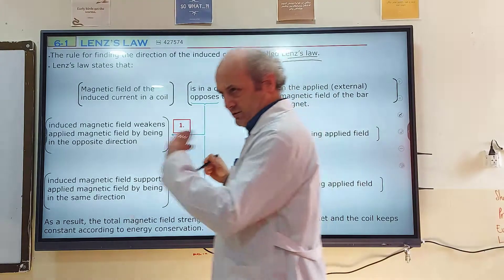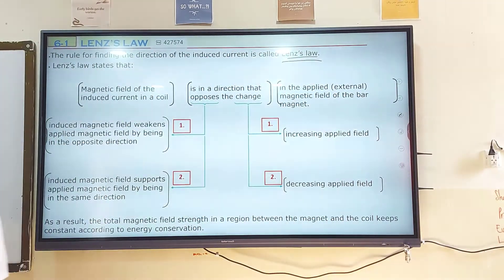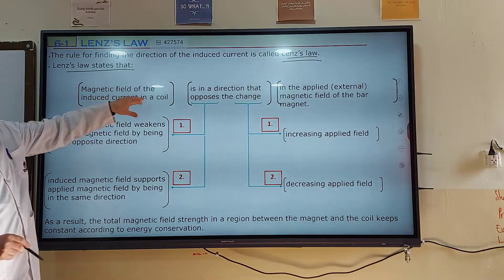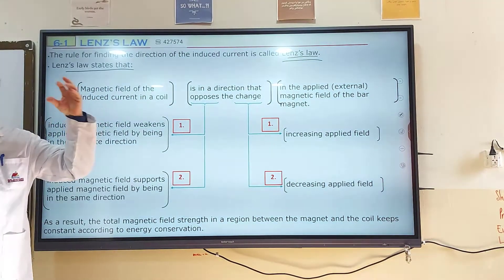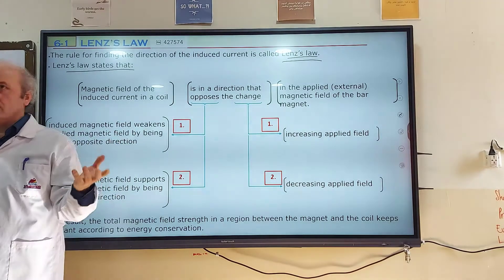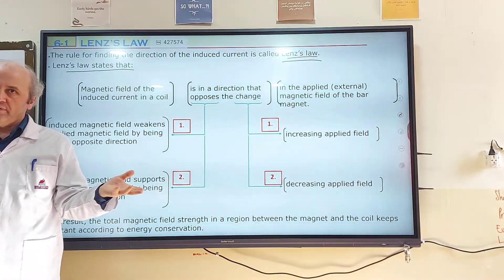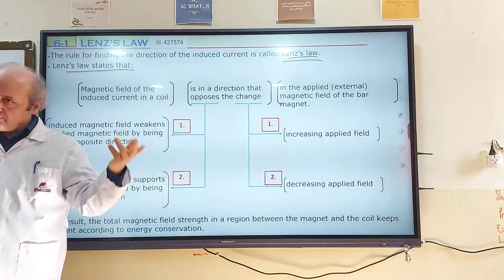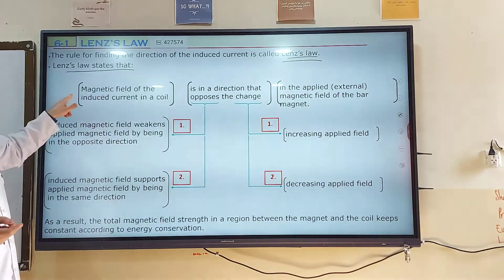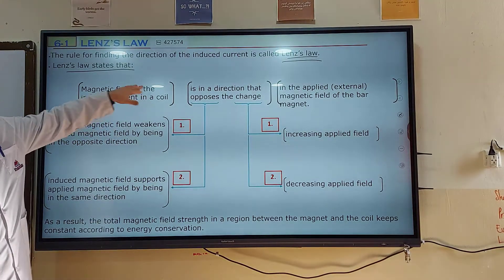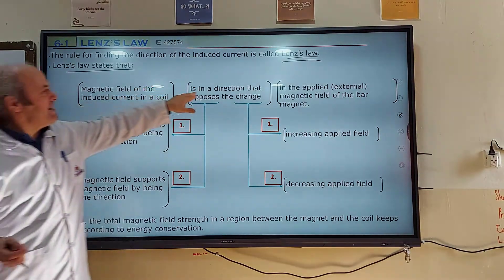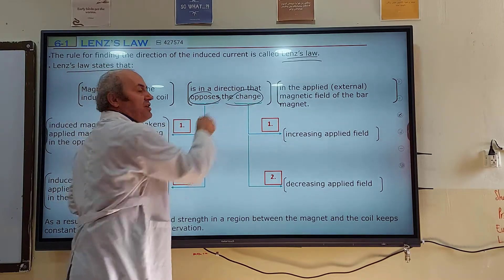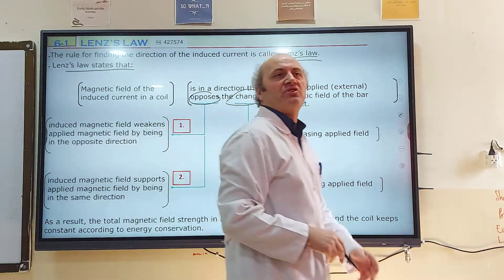What does Lenz's law tell you? Lenz's law states that the magnetic field of the induced current in a coil — when you make a magnet approaching or moving away from the coil, there will be an induced current. The magnetic field of the induced current is in the direction that opposes the change. This is the key word: opposing the change.